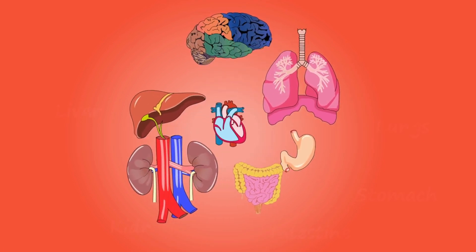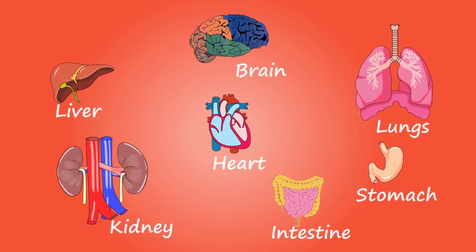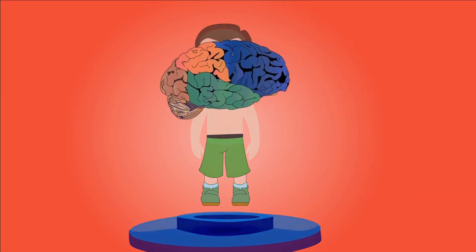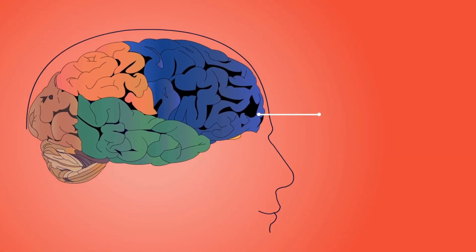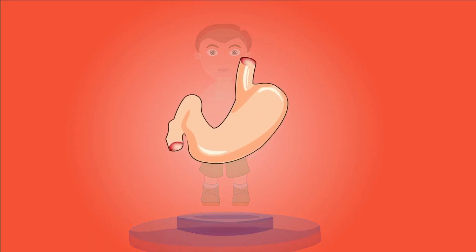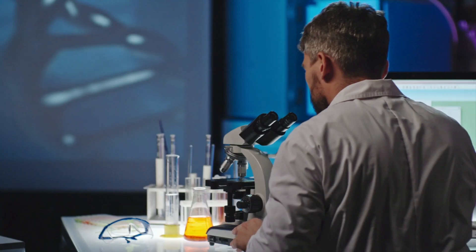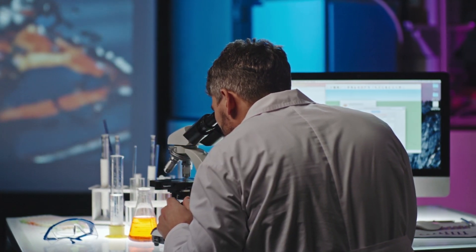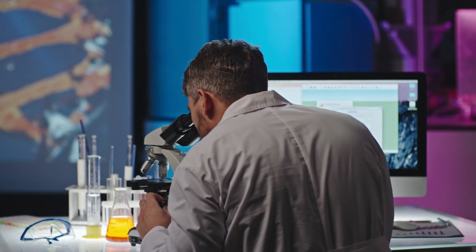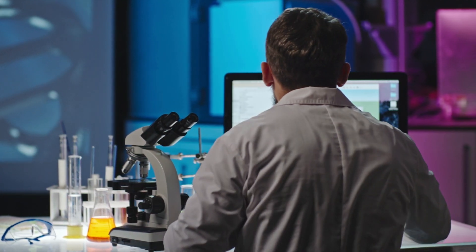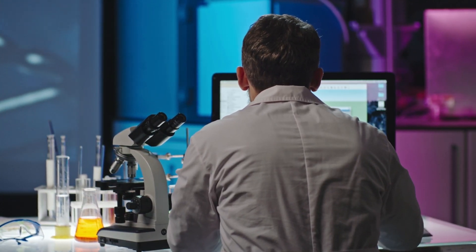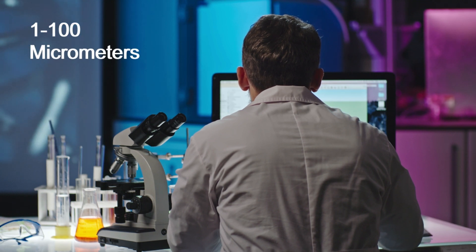Cells are found everywhere in your body and will vary according to the location they are found in. For example, cells found in the brain are different to cells found in the stomach. The study of cells is called cell biology or cytology. Most plants and animal cells are only visible using a microscope, with dimensions between 1 and 100 micrometers.